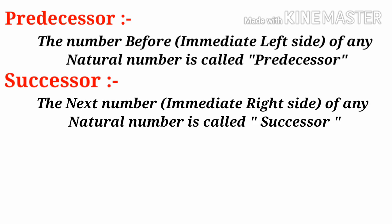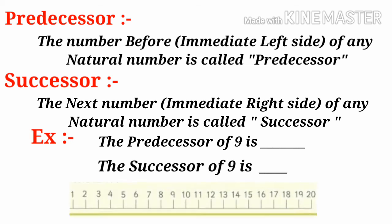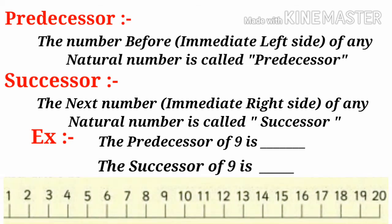For example, 9. The predecessor of 9 is dash, and the successor of 9 is dash. For this, let us take number line from 1 to 20 and round the number 9. Left side of 9 is 8, so predecessor of 9 is 8. And right side of 9 is 10, so successor of 9 is 10.